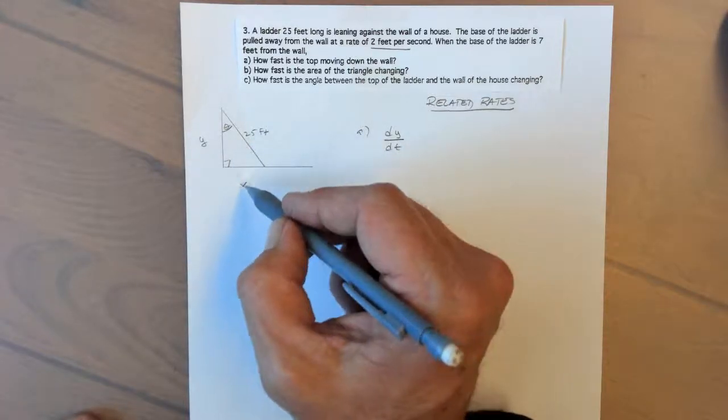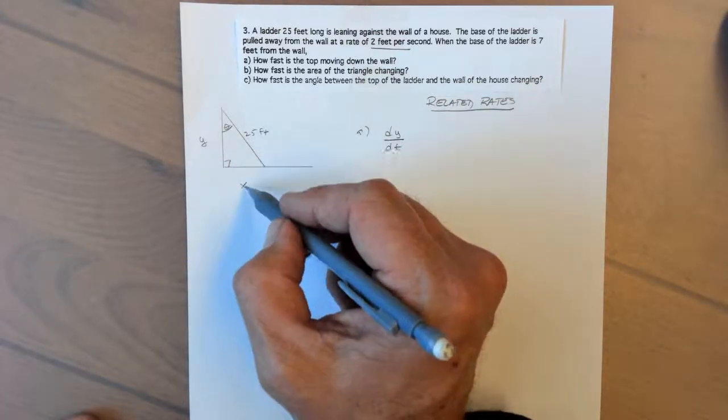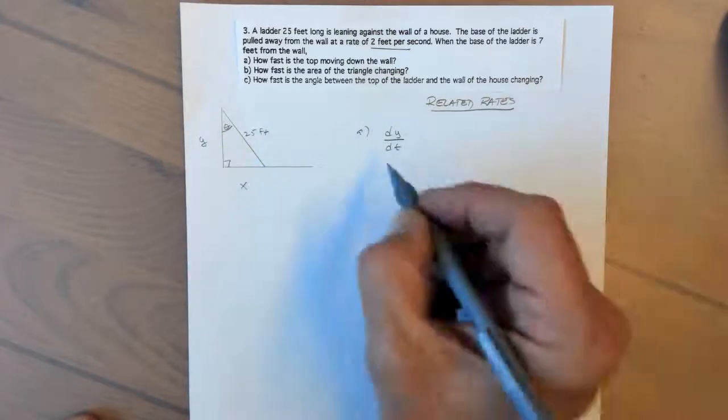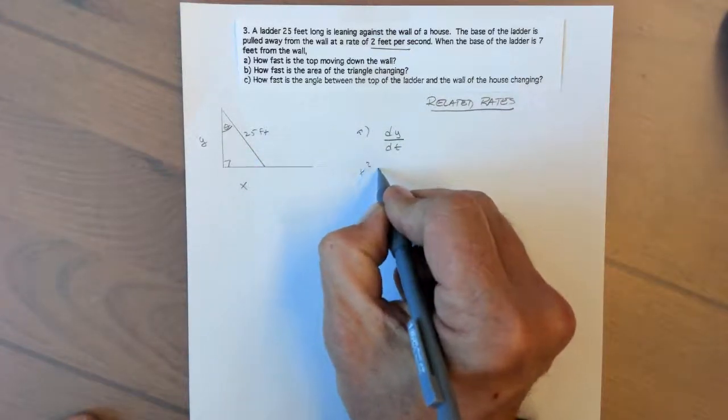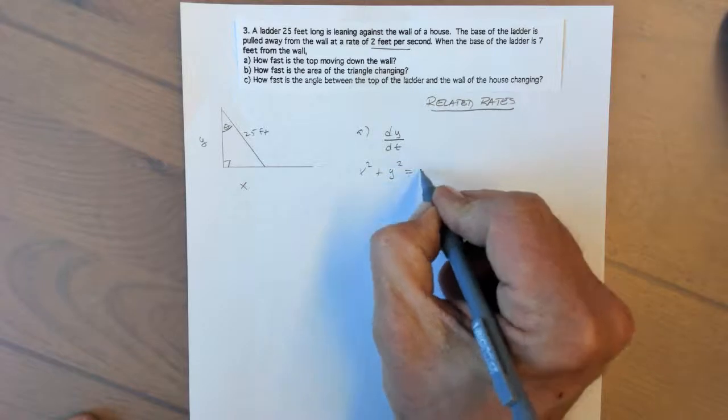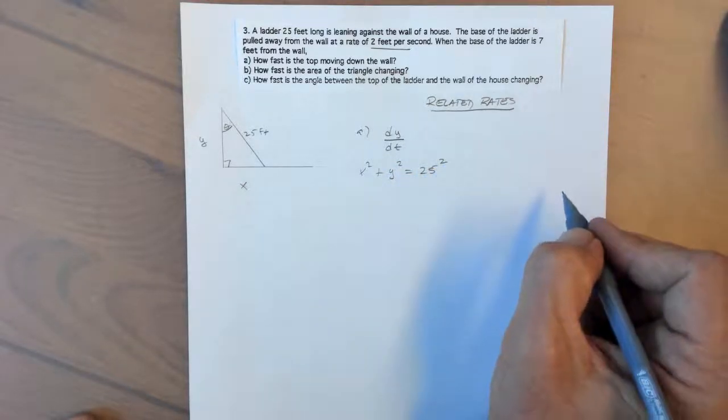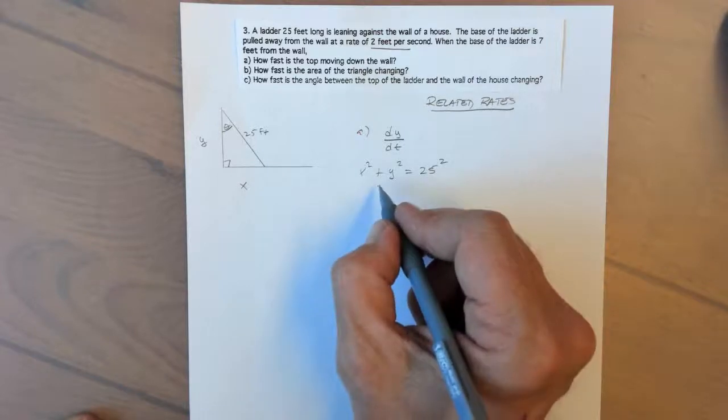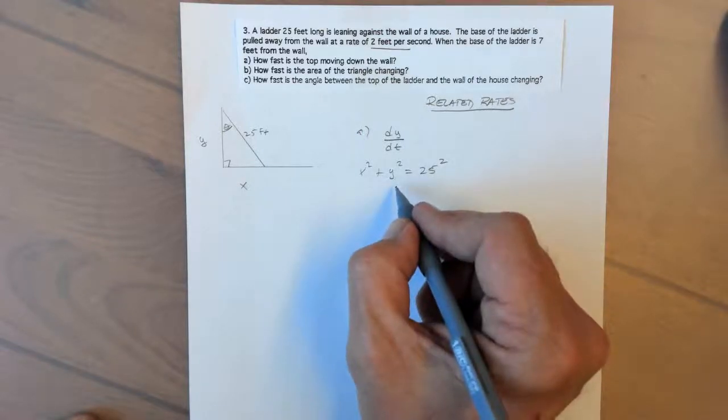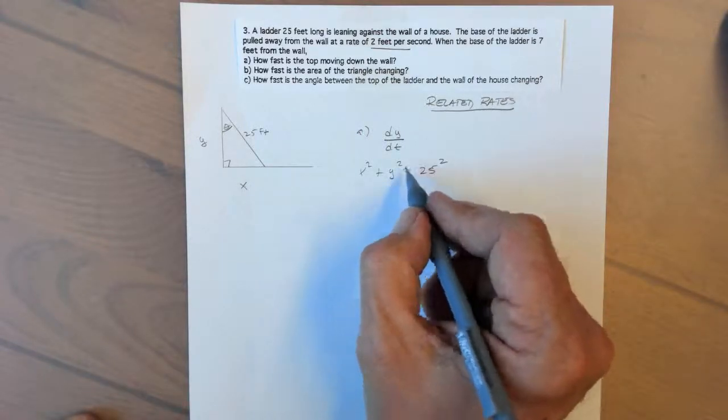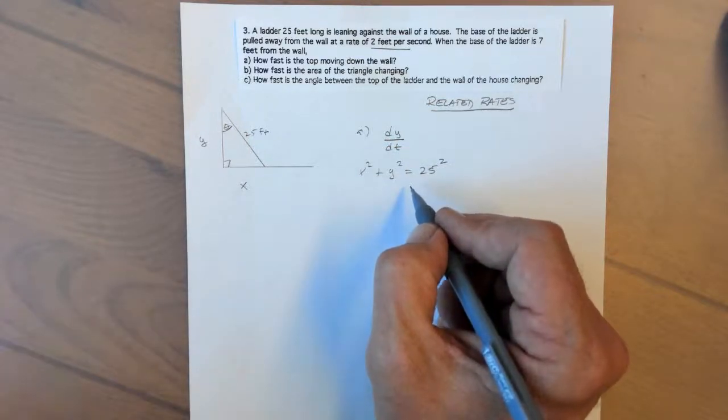We have information about the rate of change of these two sides and we're solving for that. So x squared plus y squared, and the ladder is constant, so we can substitute the 25 there. Both x and y are changing with respect to time, but this is not a function written explicitly in terms of time.